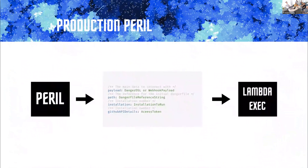Peril uses a subtraction available in Danger called process separation, where Danger in JavaScript creates a JSON blob and passes it to a separate process. This is why we can have Danger in Swift, Danger in Rust, and Danger in Kotlin. Peril creates a payload of JSON data representing your PR and passes that into the function. The Lambda function is just a function invoked on a separate computer. It receives a set of paths to evaluate — grab them from GitHub — plus the installation, API access tokens, and either the Danger DSL or the webhook that came in.